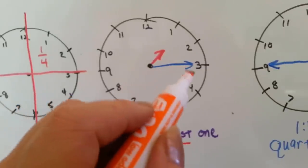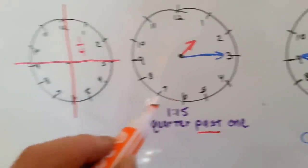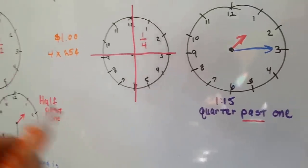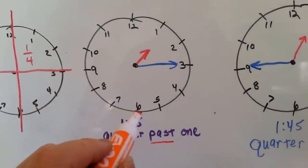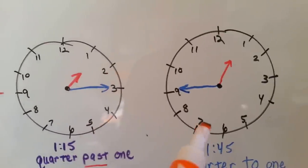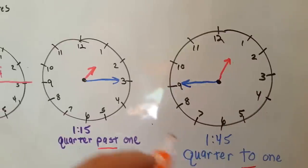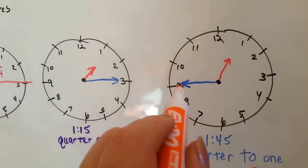Now, when the minute hand gets down here, we don't say two quarters past, we say half past. Now, when the minute hand continues going around, and it points to the 9...